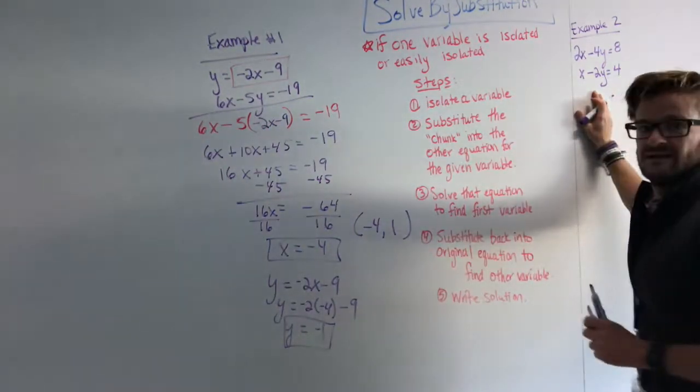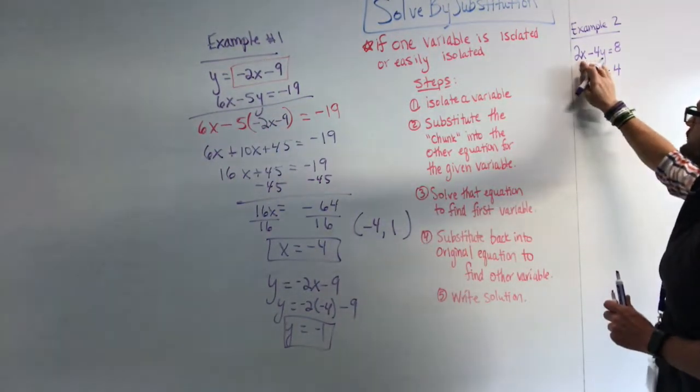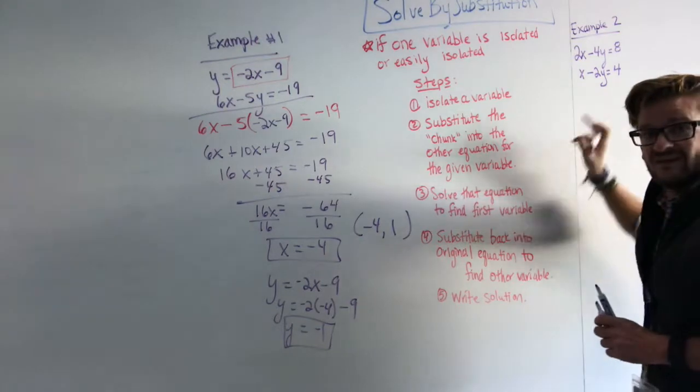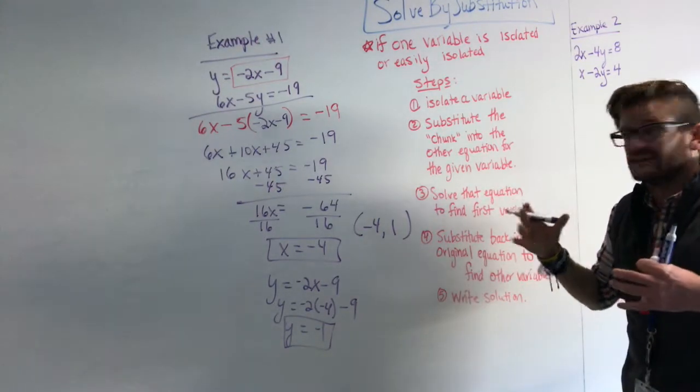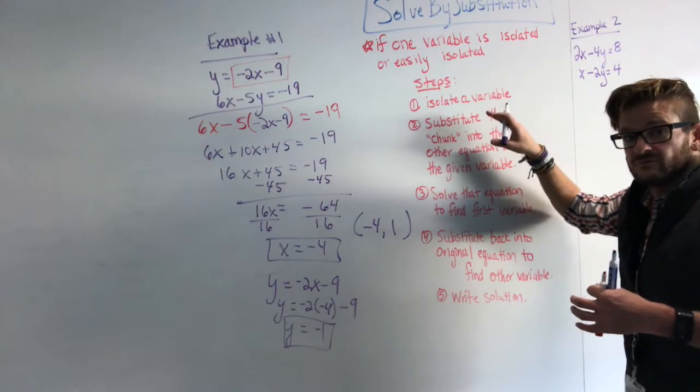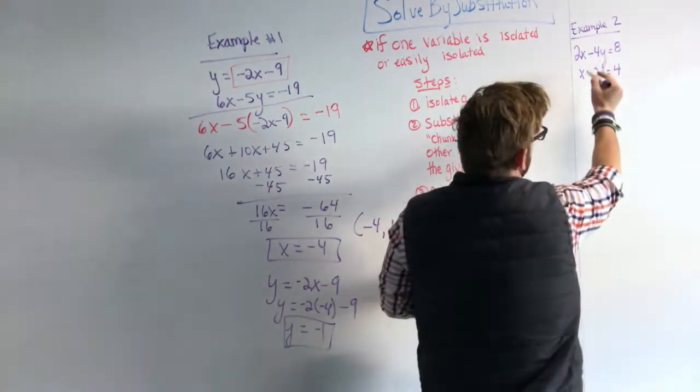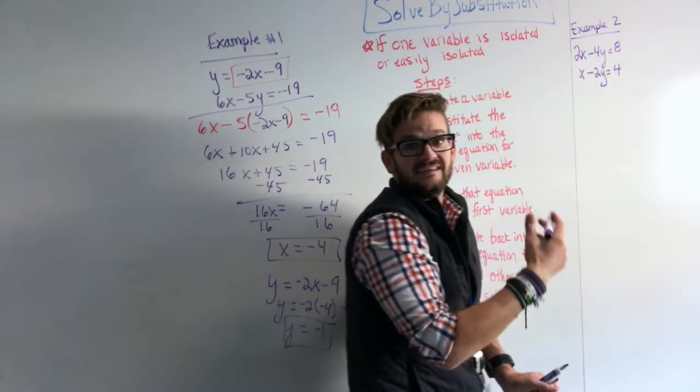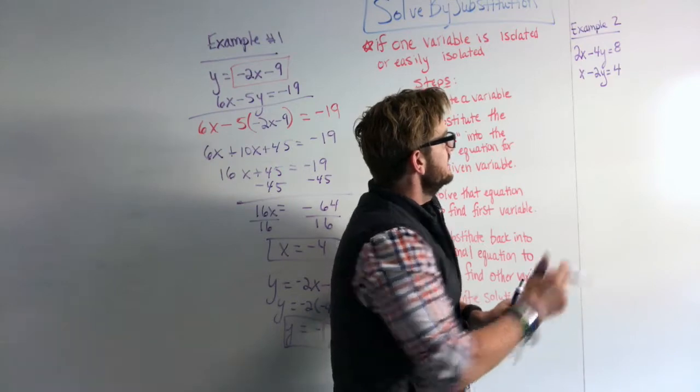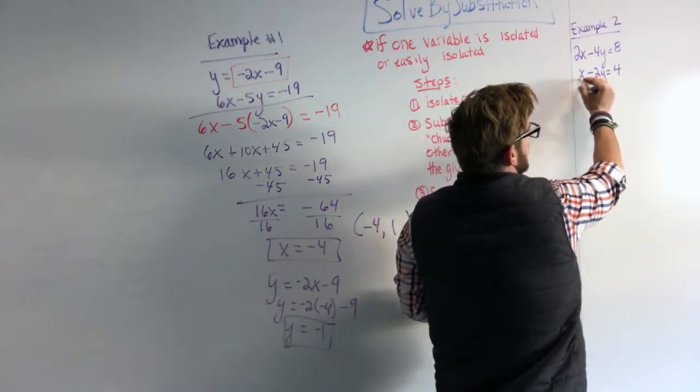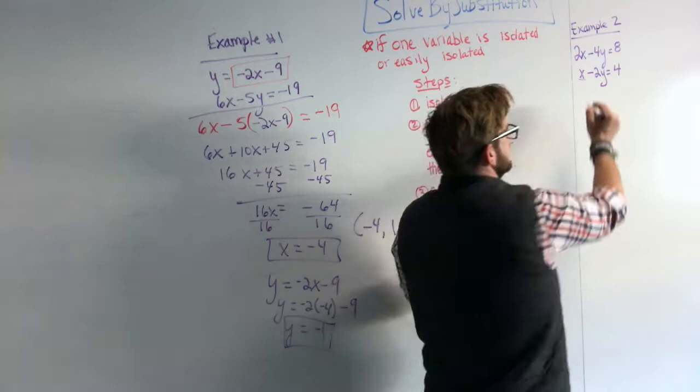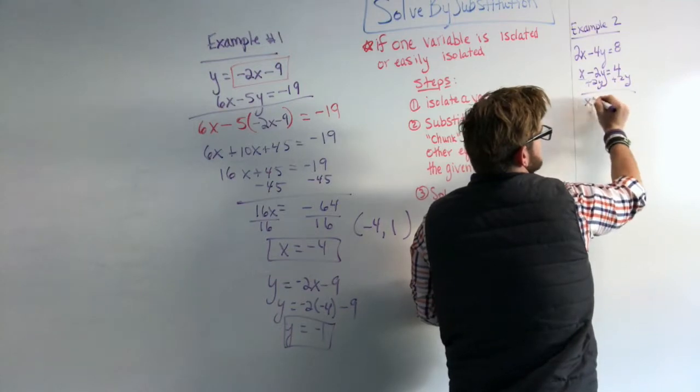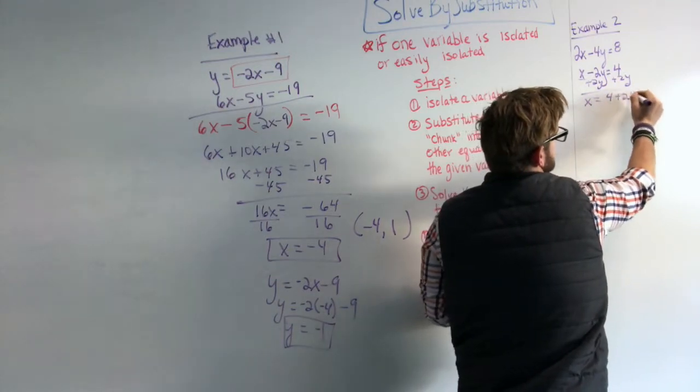So as we look at example two, we can see that we have 2x minus 4y equals 8, and we have x minus 2y equals 4. Now, these are not, there's not an isolated variable. So what we're going to need to do is we're going to need to isolate a variable. So when I look at these, I have 2x, I have negative 4y, I have x, and I have negative 2y. The x here is the easiest to simplify. So I'm just going to take this equation and I'm going to solve it for x. So I'm going to add 2y to both sides. And I have x equals 4 plus 2y.